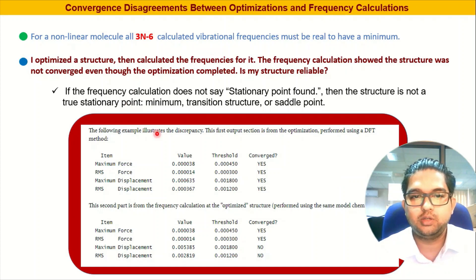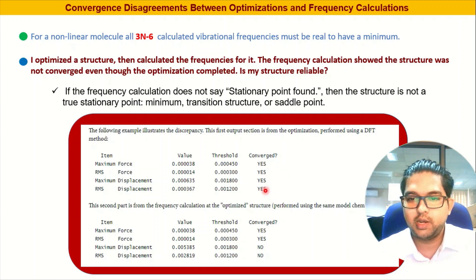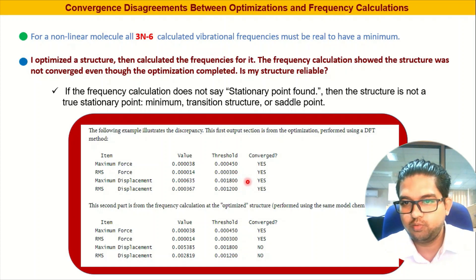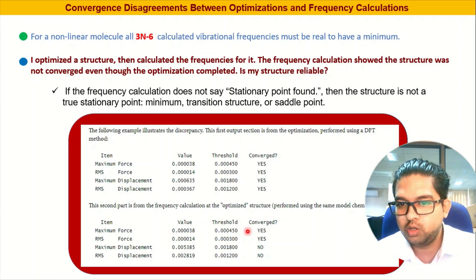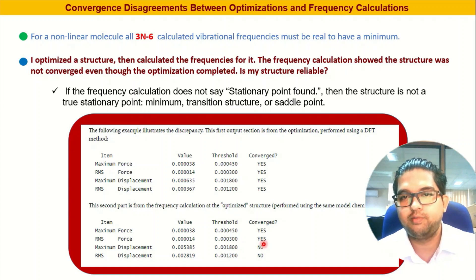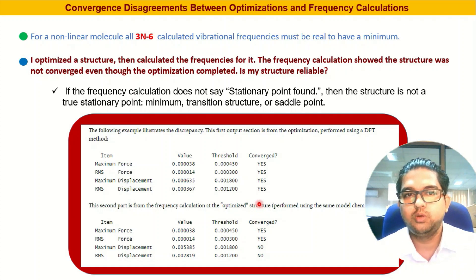When the geometry is fully converged you will see yes/yes/yes/yes for every convergence criterion. In frequency optimization you may see yes/yes/no/no — that means geometry optimization is okay with no convergence failure. But if you are getting negative frequencies, that means there is a convergence failure in terms of the RMS energy, and we need to tackle those convergence issues.